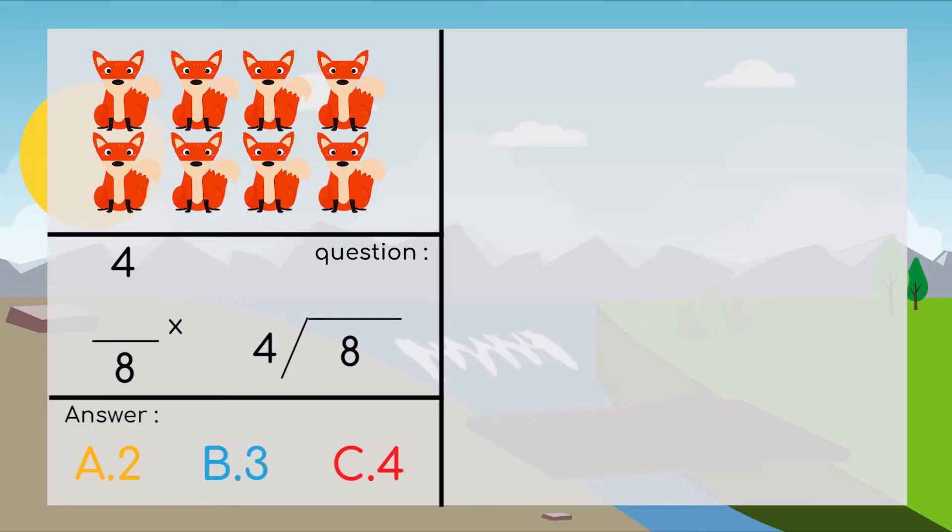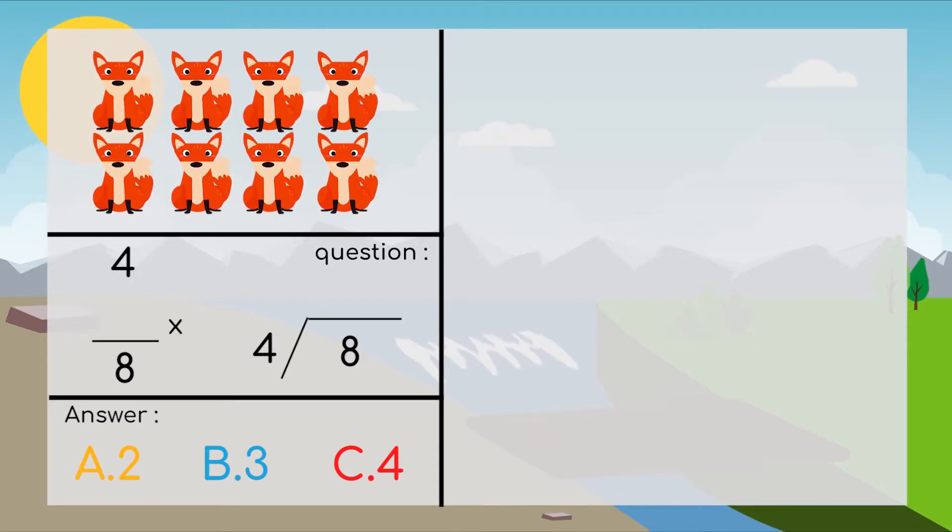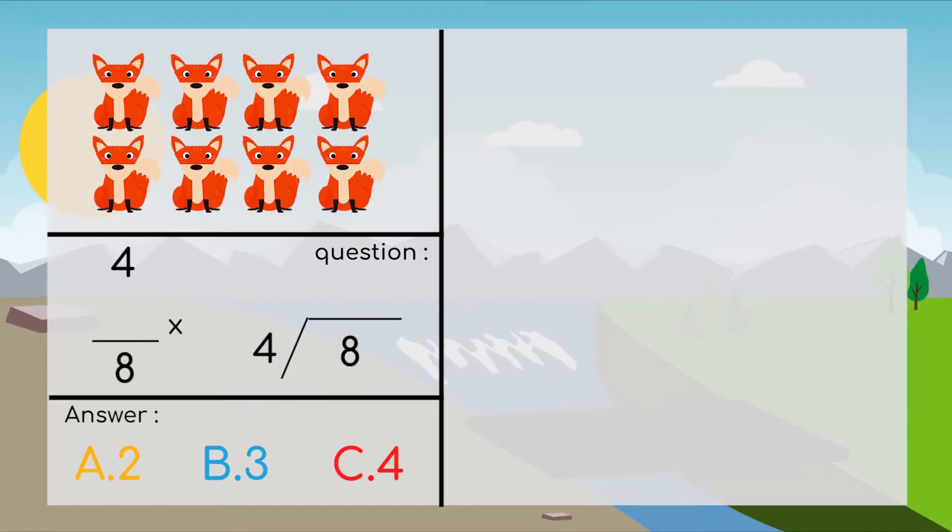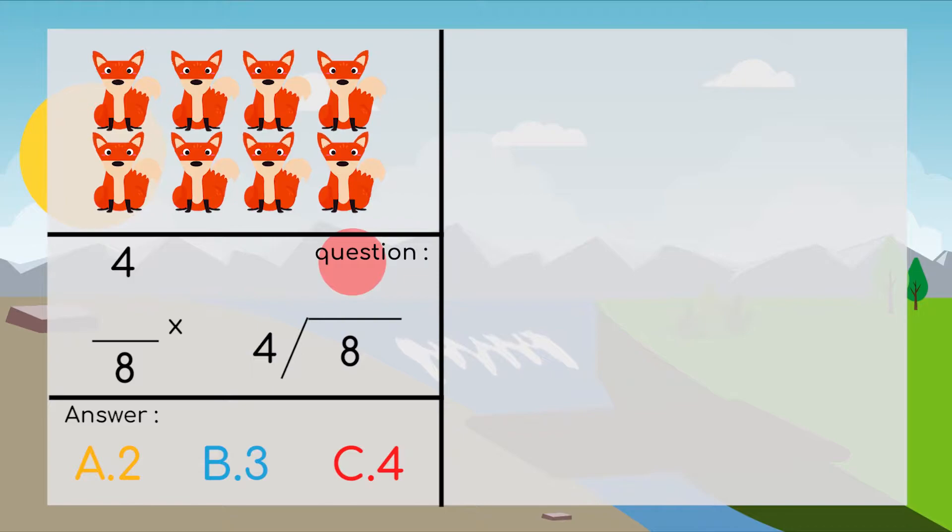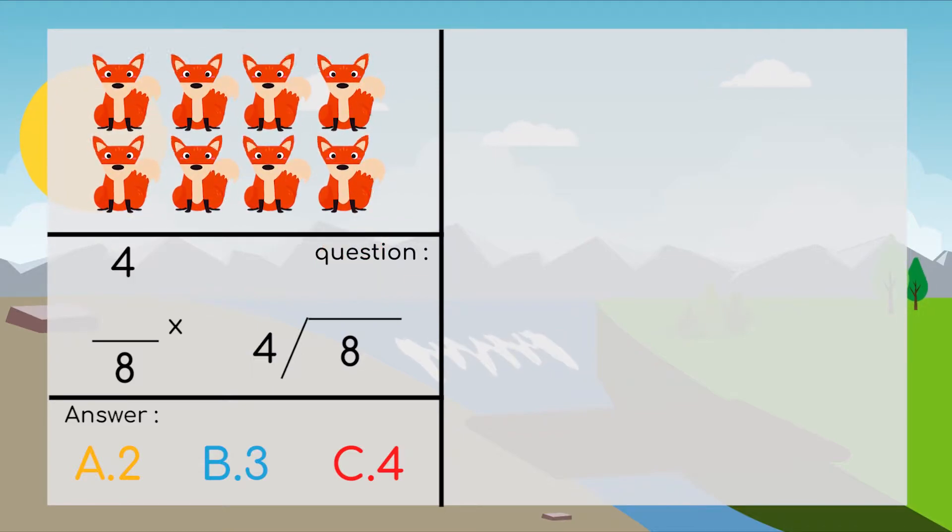On our first question here, we got a picture of foxes. And we also got a form of question here that said 4 times blank equals 8, and 8 divided by 4 equals blank. I think we have to find the missing number.